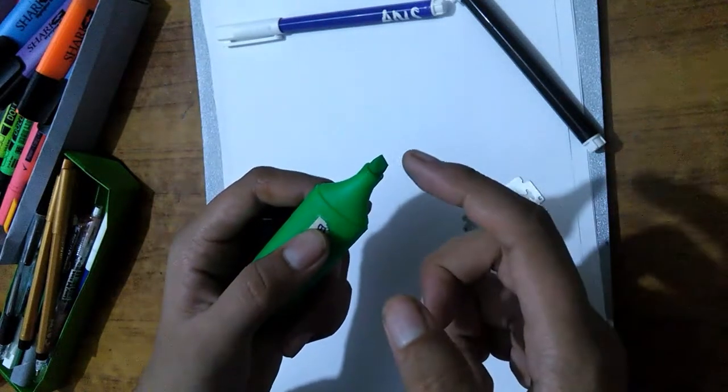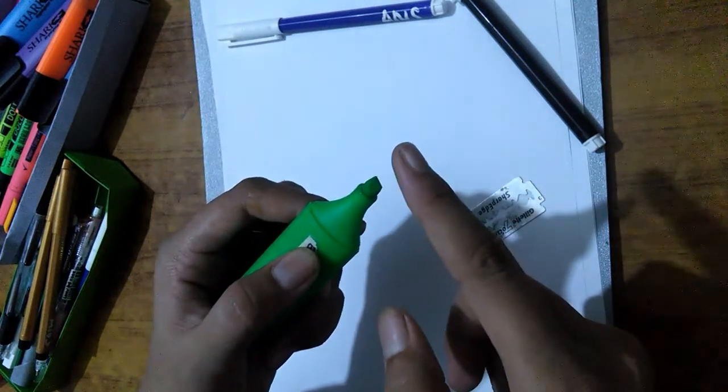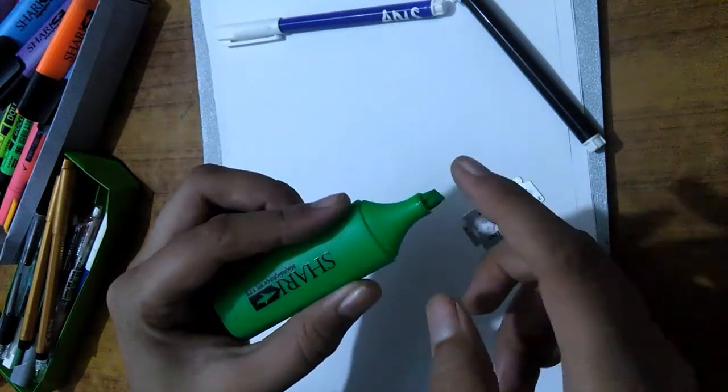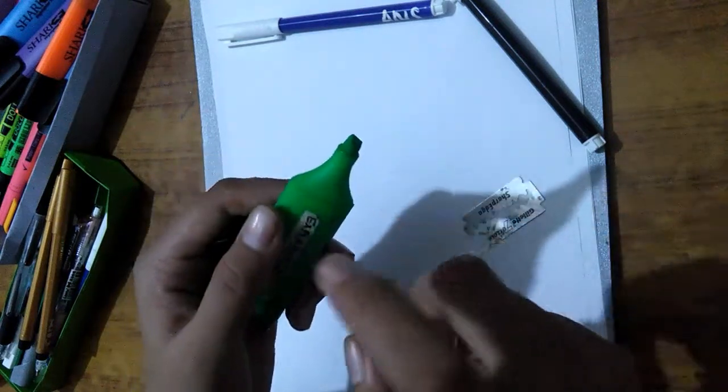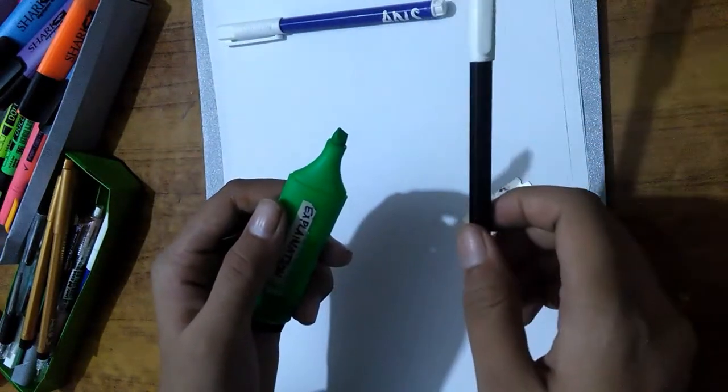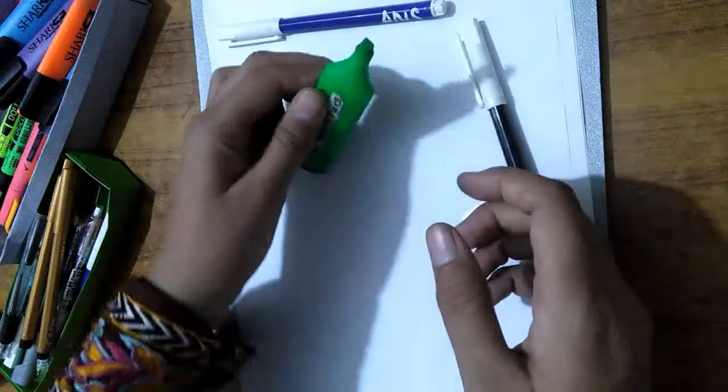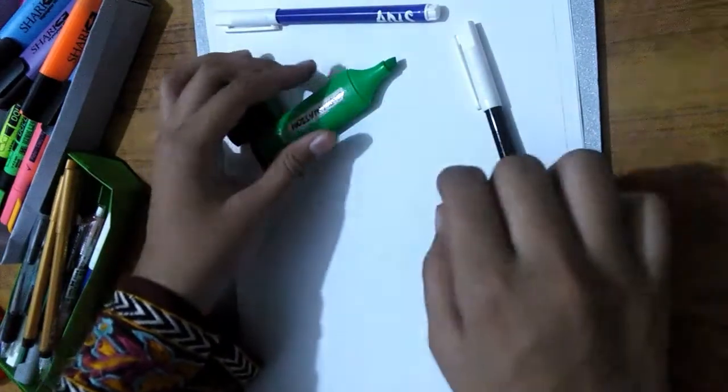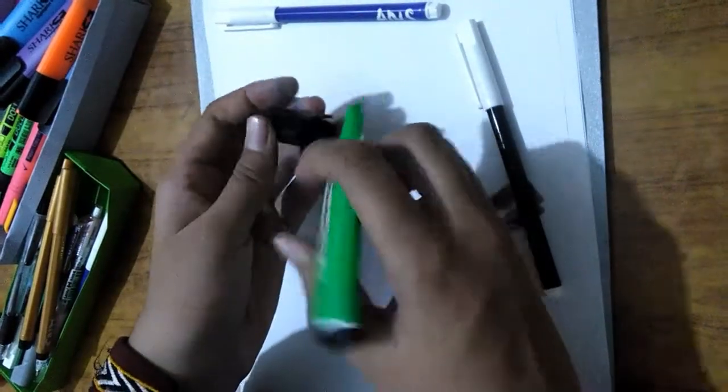If you do not know how to cut the nib, you can use your highlighter as a guide. You will have to cut the nib of your marker just like the nib of the highlighter is. So you can use it as a reference.